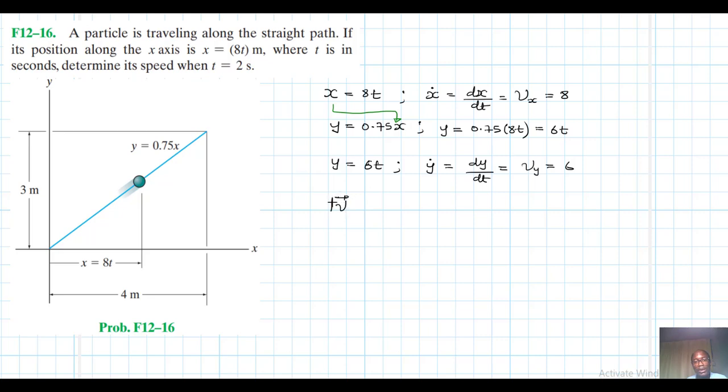The velocity vector magnitude of that is equal to the speed. This is equal to the square root of vx squared plus vy squared. And this is just going to be equal to the square root of 8 squared plus 6 squared, which gives us 10 meters per second.